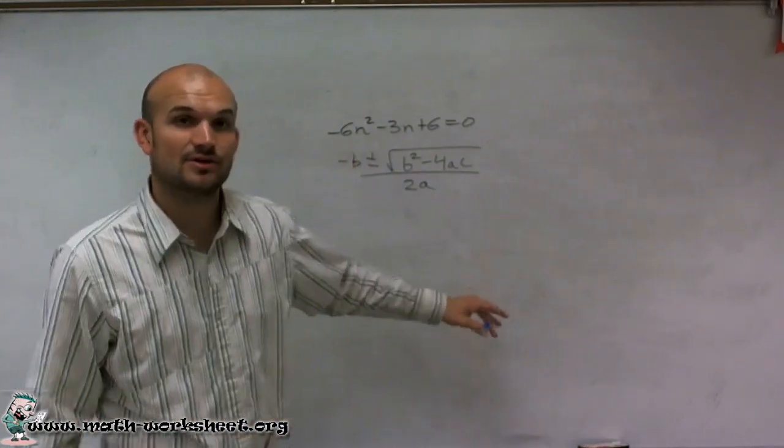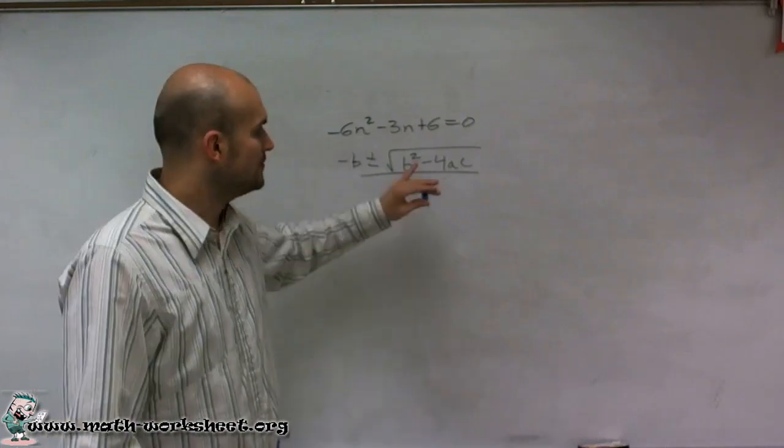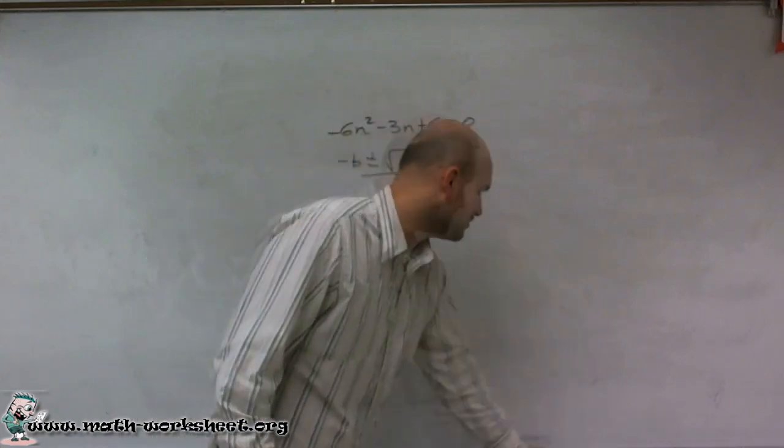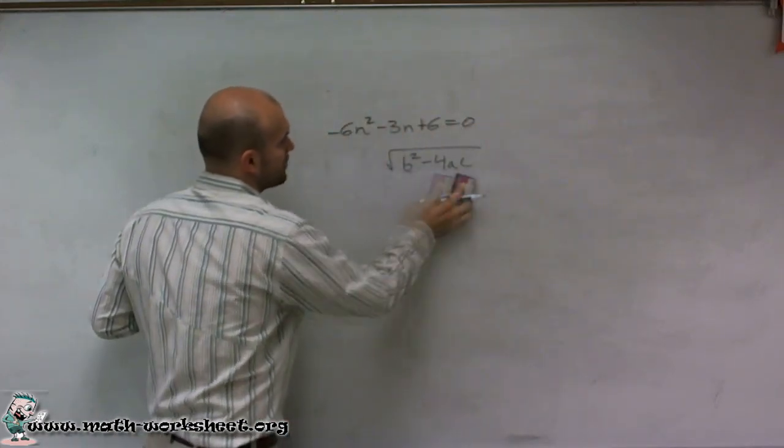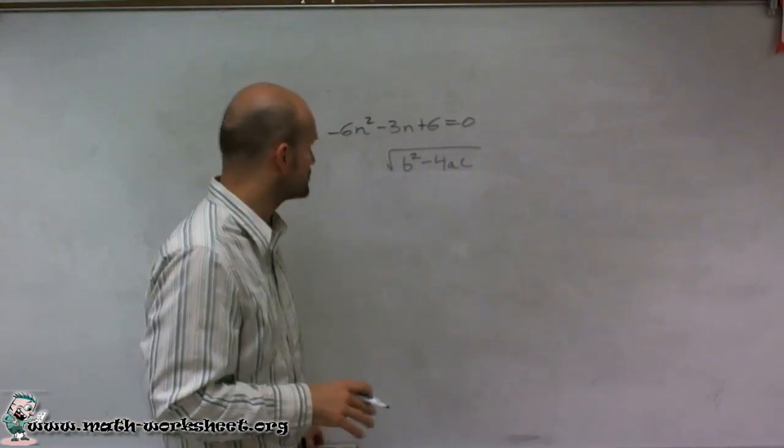We're not going to actually find the zeros or the solutions. But what we want to do is know what type of answers we're going to get even before we figure out the rest of this answer. So when looking at the discriminant, all we're going to be concerned about is what's going to be under our square root, because we want to know what type of number we're going to be taking the square root of.